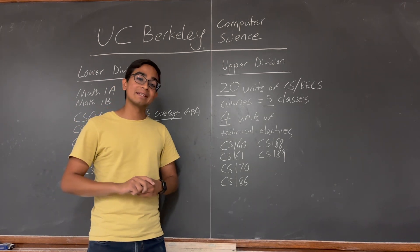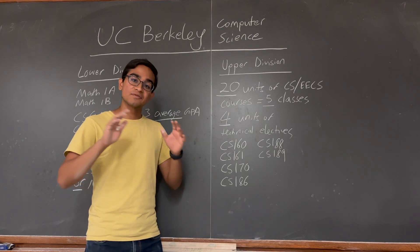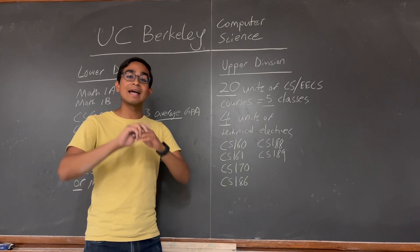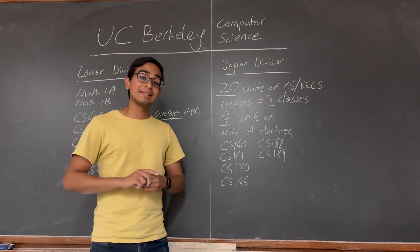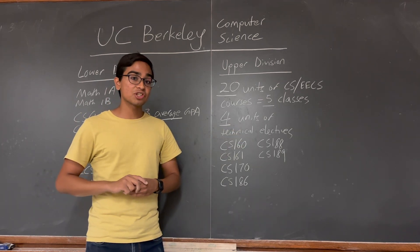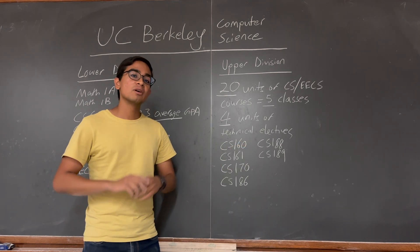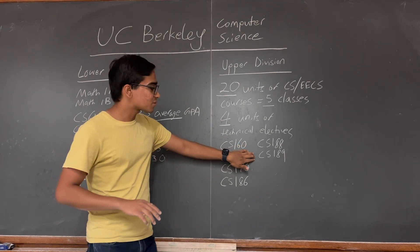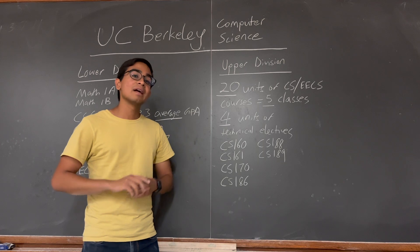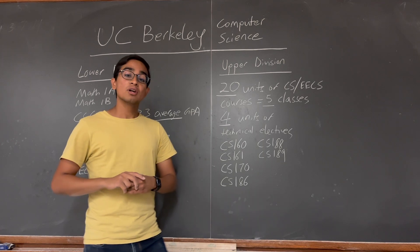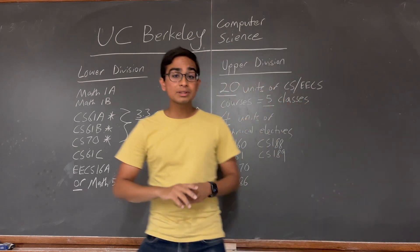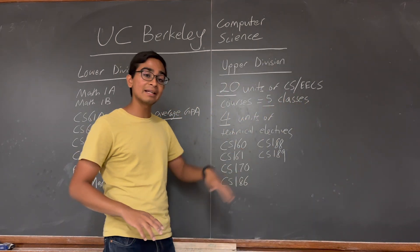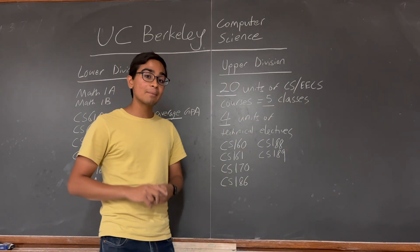The next one is CS 186, Databases. This is very important because databases are everywhere in industry. The next one is CS 188, which is Artificial Intelligence and is closely linked to CS 189, which is Machine Learning. CS 189 is Math Heavy and requires Math 53, which is not a requirement in the CS major. So do take note that if you want to take CS 189, Math 53 is a recommended prerequisite.